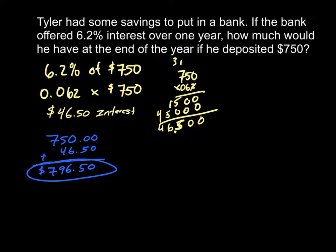Remember to pay attention to the question, how much would you have at the end of the year? So you have your $750 plus your interest, which gives you $796.50.